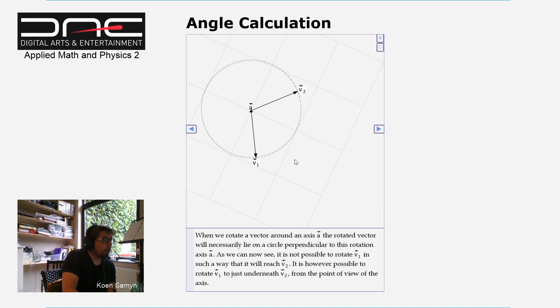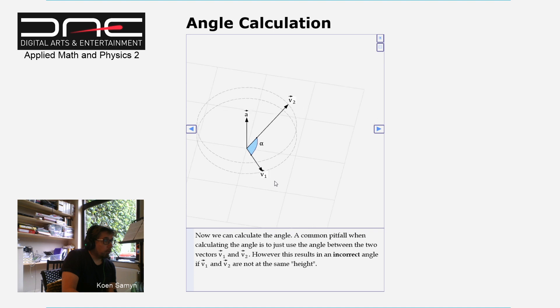Alright, so we have an axis. Now we need to find the correct angle. Many students think that the angle is just the angle between the two vectors, but this is incorrect. Because V1 and V2 are not at the same height, so to speak, if you look from a side view, this angle will be a bit too big.